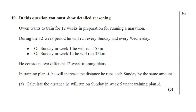Part A: In training plan A, he will increase the distance he runs each Sunday by the same amount. Calculate the distance he will run on Sunday in week 5 under training plan A. The question carries 3 marks.